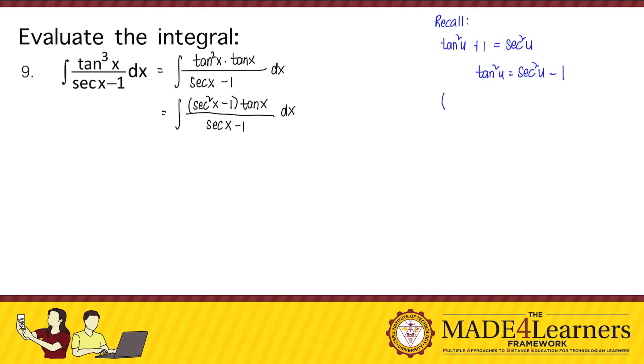Okay, after that, we have a special product formula, u plus v times u minus v equals u squared minus v squared, which is followed by this form. So we can factor out secant squared x minus 1 into secant x plus 1 times secant x minus 1 times tangent of x over secant of x minus 1 dx.